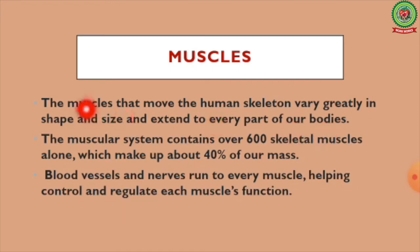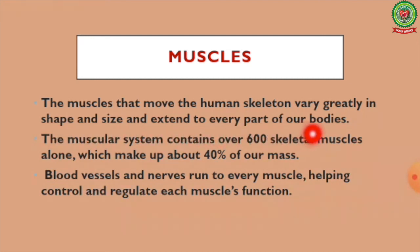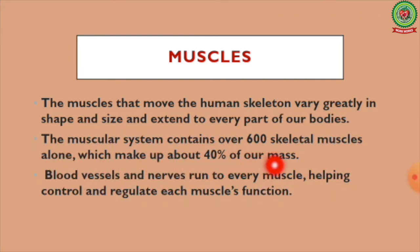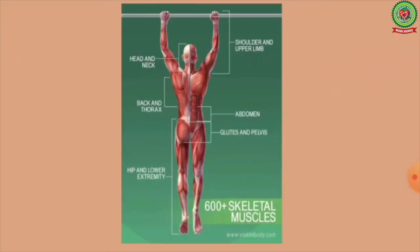Next we discuss muscles of the human body. The muscles that move the human skeleton vary greatly in shape and size and extend to every part of our bodies. The muscular system contains over 600 skeletal muscles, which make up about 40% of our mass. Blood vessels and nerves run to every muscle, helping control and regulate each muscle's function.